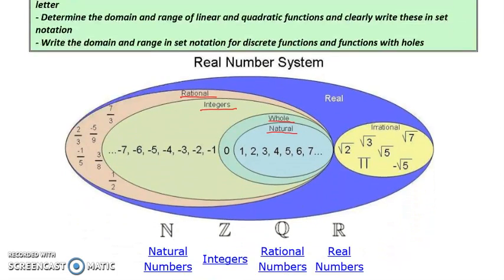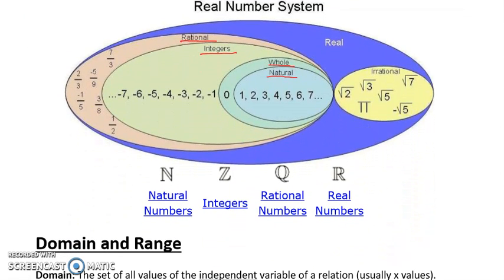Let's look at the real number system. The real number system is made up of natural numbers — as I've underlined for you there — and those are the numbers you learned when you first started counting. Whole numbers also include zero, and then also 1, 2, 3, 4, 5, 6, 7, 8, etc.